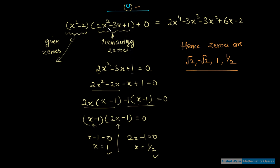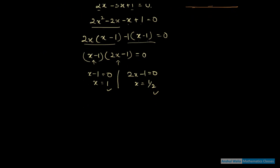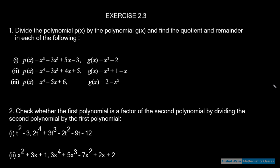तो सारी 4 zeros हैं: √2, -√2 (given), और 1, 1/2 (निकाली गई)। Summary: दो zeros से factor बनाया, p(x) को उससे divide किया, remaining polynomial को further factorize किया।